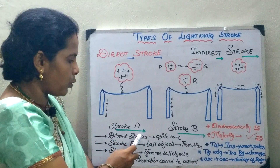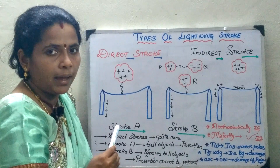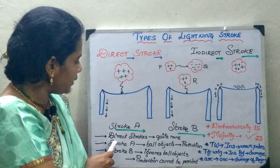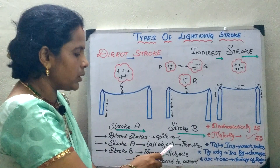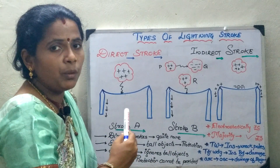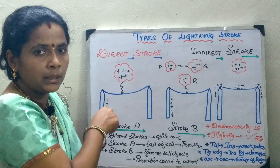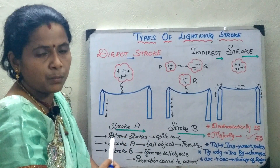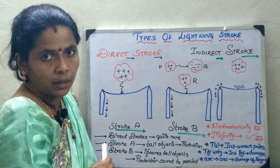If you consider the characteristics of stroke A: these direct strokes are quite rare in nature. Stroke A falls on tall objects, so you are able to provide protection against it. It will fall on the tall tower, and by the time it reaches the ground you can provide the protection.